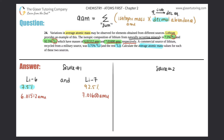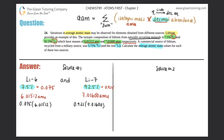For source one, we convert 7.5% to 0.075 and 92.5% to 0.925. Those are the numbers we multiply. We take 0.075 times 6.01512, and then 0.925 times 7.01600 to get those values.